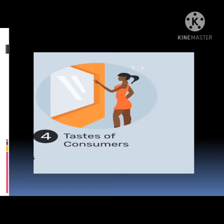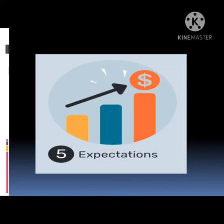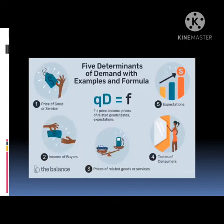The fifth and last determinant is expectations. When people expect that the value of something will rise, they demand more of it. Customer satisfaction reflects the expectations and experiences of the customer. So, these are all the five determinants: price of goods or services, income of buyers, prices of related goods or services, taste of customers, and expectations.